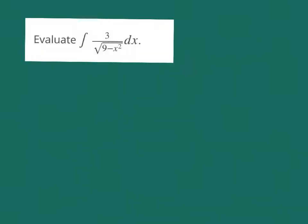So now in this problem, we're asked to evaluate the integral of 3 over the square root of 9 minus x squared. Again, the expression we see under the radical is guiding us to what our trig substitution is going to be. When we see 9 minus x squared, that reminds us of something that looks like 1 minus sine squared being cosine squared.